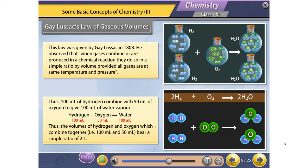Hydrogen plus oxygen gives water: 100 ml plus 50 ml gives 100 ml. Thus, the volumes of hydrogen and oxygen which combine together — 100 ml and 50 ml — bear a simple ratio of 2 to 1.